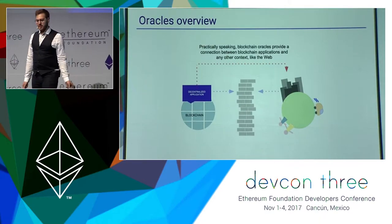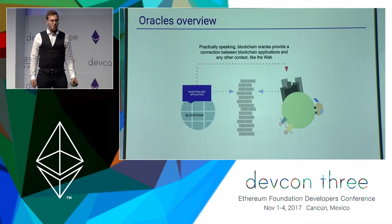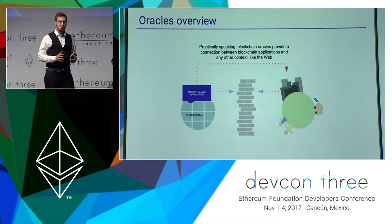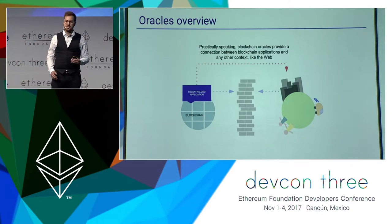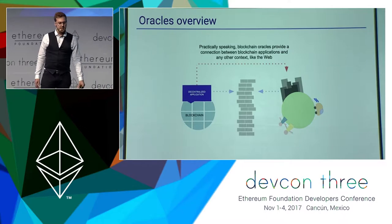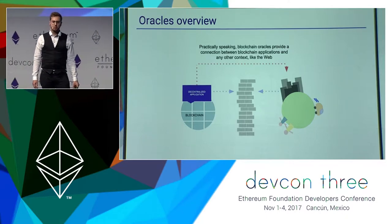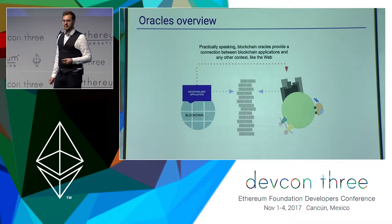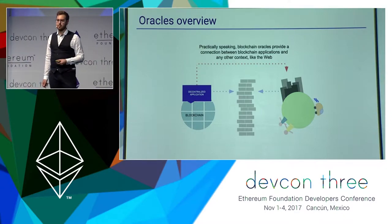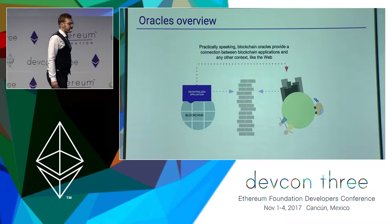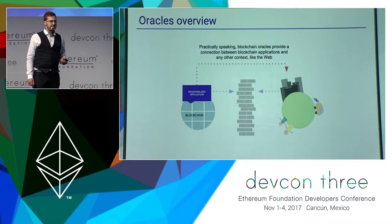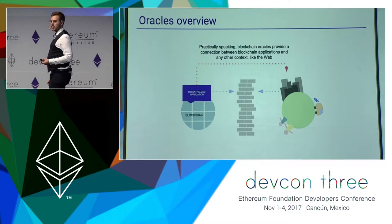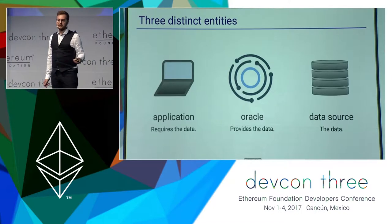We have already seen in the previous presentations what the Oracle problem really is. We know that in decentralized networks, like on Ethereum, it's really complicated to reach out to external data — data which we find in different contexts, like for example on the web. But in general, this is something we want, because for decentralized applications to have value, those applications might depend on external real-world data.